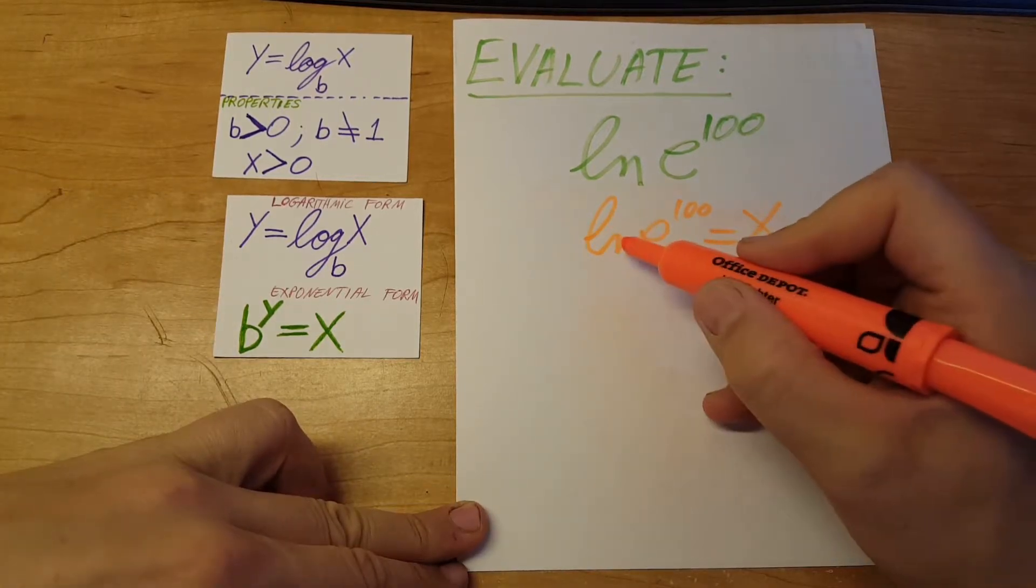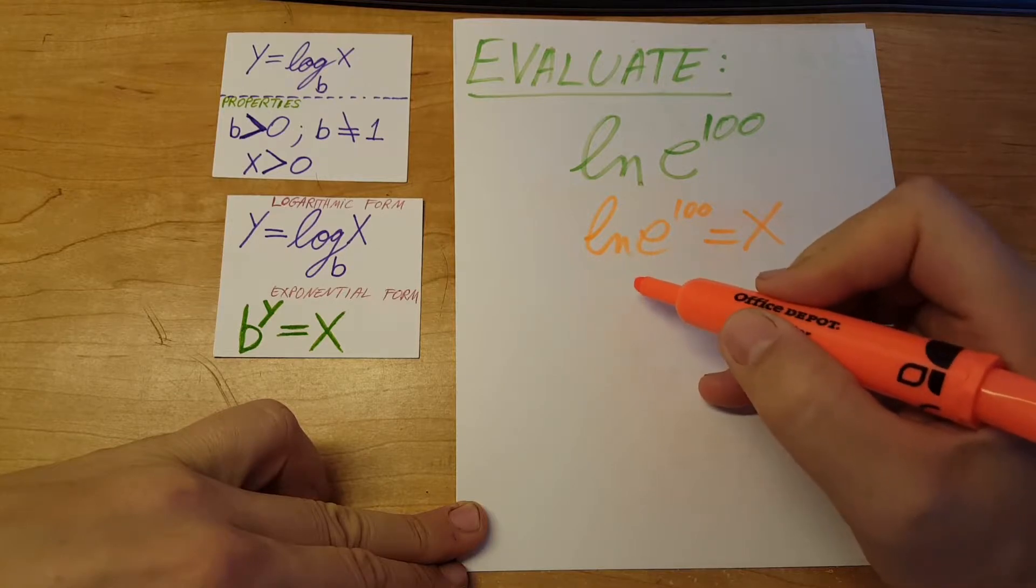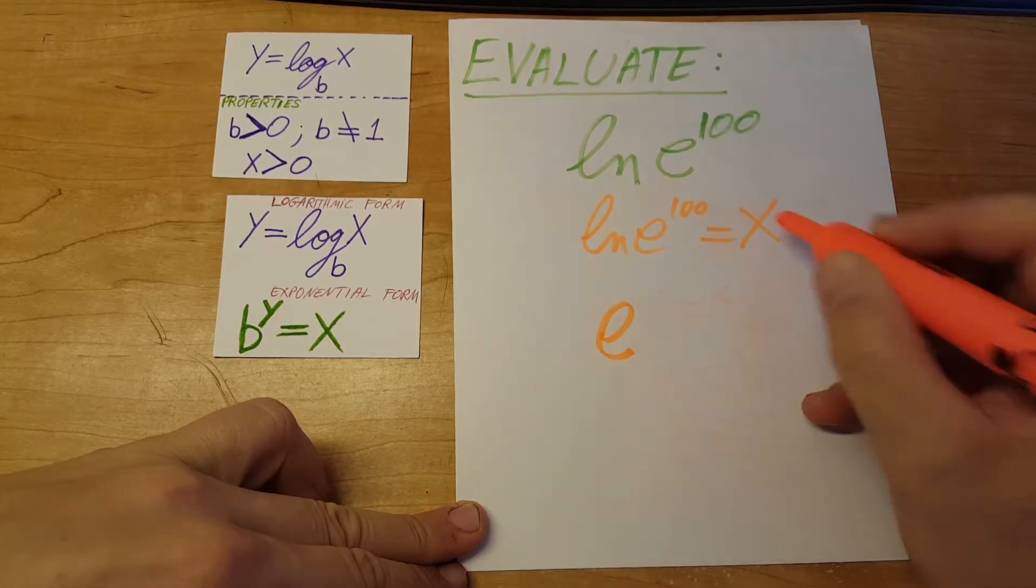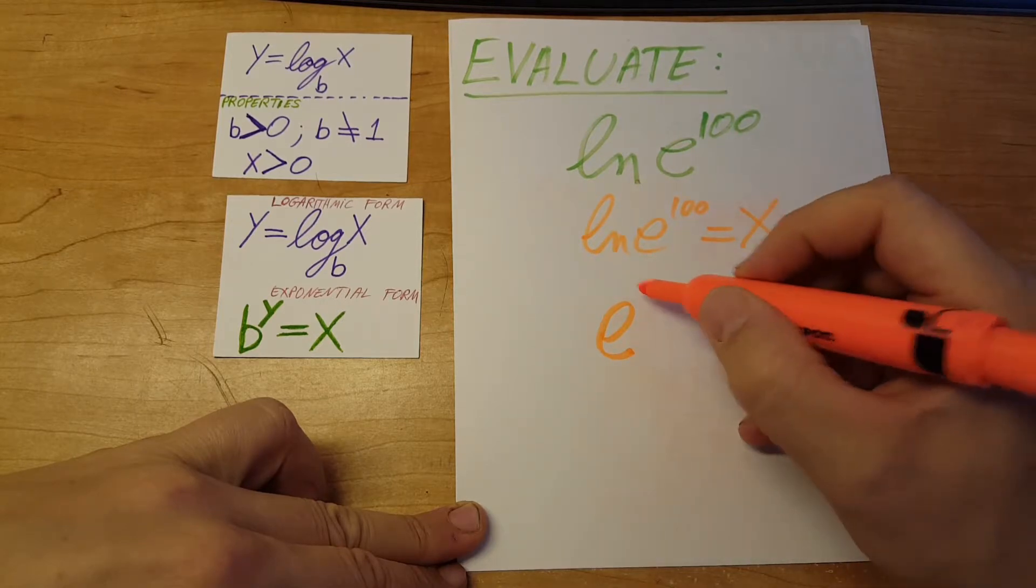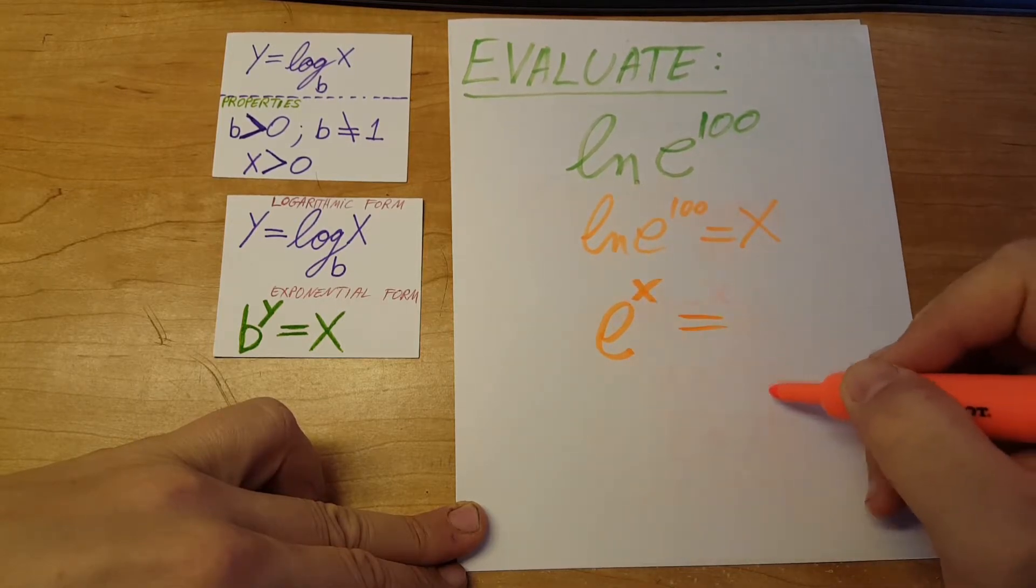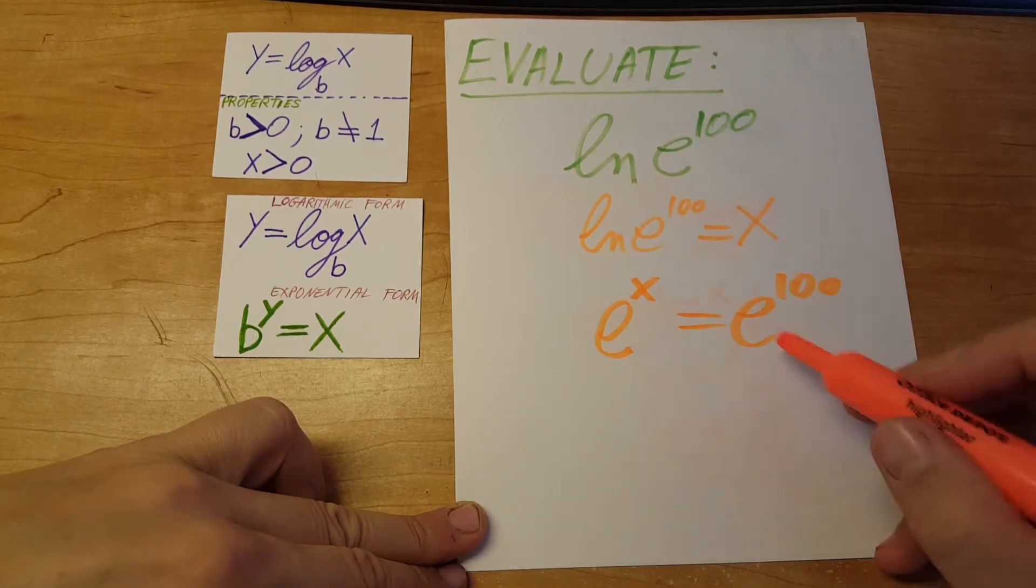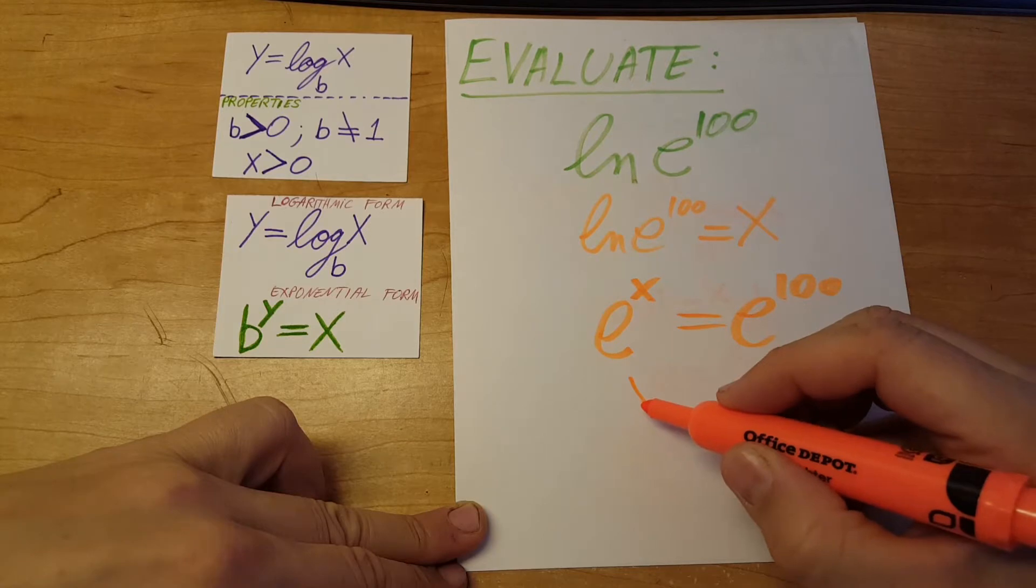This ln has included a base with an e, so you're going to take that e and raise it to the power of x, which is equal to e to the 100. The bases are the same, so we're going to cancel them.